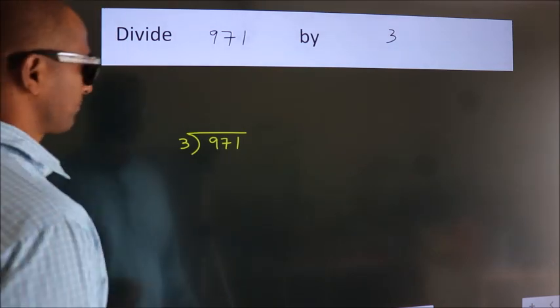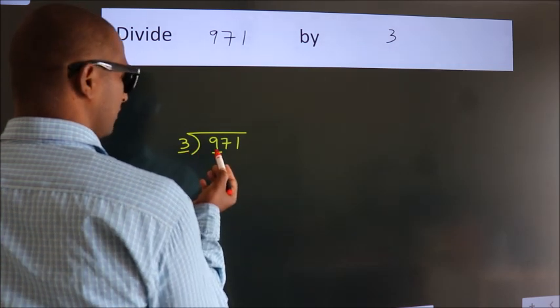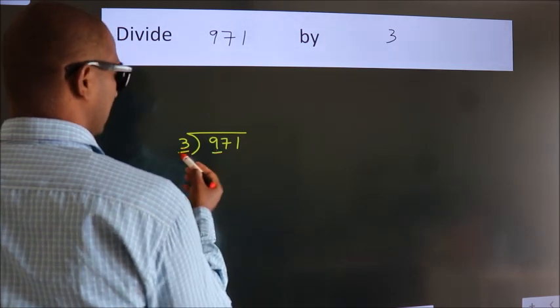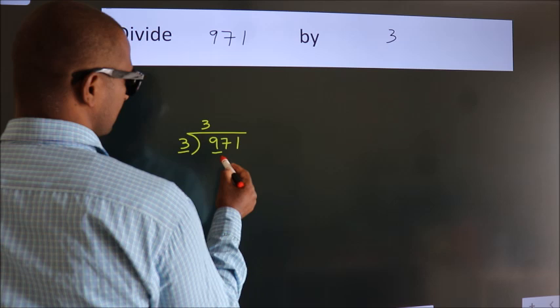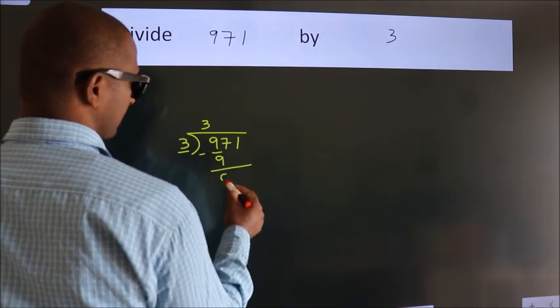Next, here we have 9, here 3. When do we get 9 in the 3 table? 3 times 3 is 9. Now we should subtract. We get 0.